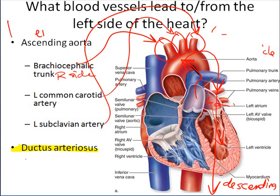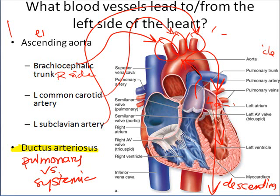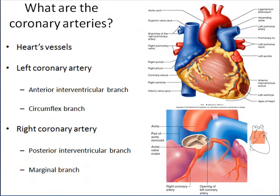Remember the difference between the pulmonary and systemic circuits. The pulmonary circuit connects the right side of the heart to the lungs and returns blood to the left side of the heart. The systemic circuit connects the left side of the heart via the aorta, which distributes blood throughout the body and returns it back to the right side of the heart.